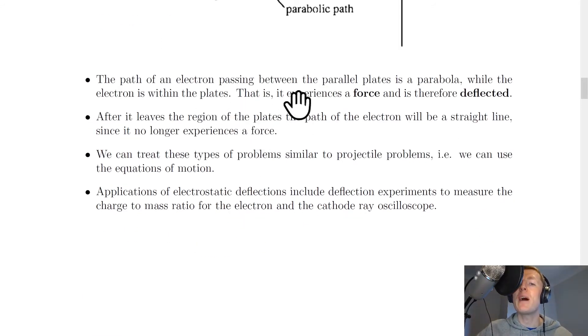The path of an electron passing between the parallel plates is a parabola while the electron is within the plates. That is, it experiences a force and is therefore deflected. After it leaves the region of the plates, the path of the electron will be a straight line since it no longer experiences a force.